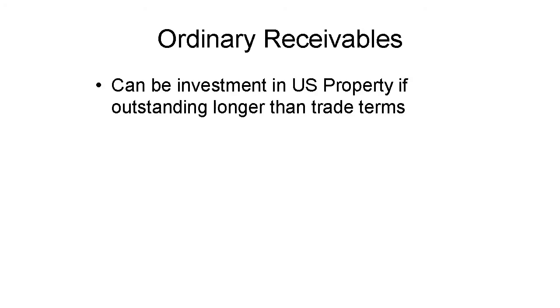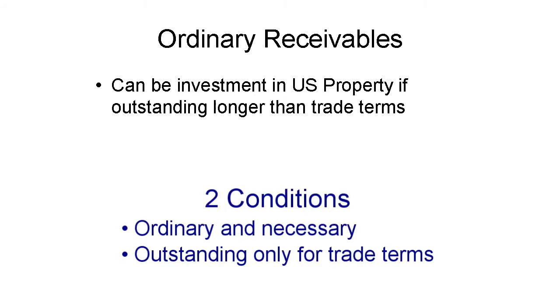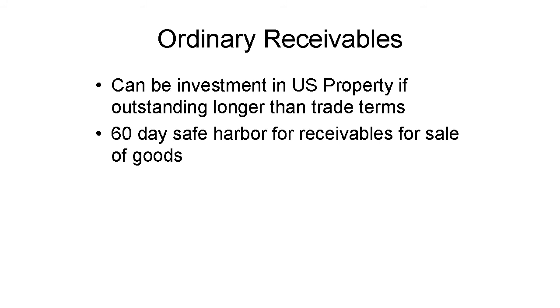Loans to related U.S. persons can also include amounts the CFC is to receive from commercial transactions, such as for the sale of goods or performance of services. There is an exception, though. Trade receivables are excluded only if two conditions are met. First, the transaction giving rise to the amount and the amount itself must be ordinary and necessary — that is, in the ordinary course of the CFC's business. Second, the receivable must be outstanding for ordinary trade terms only. The IRS has indicated that any amount receivable for sale of goods is considered to be outstanding for ordinary trade terms if it's paid within 60 days. Trade terms could be longer in some industries.